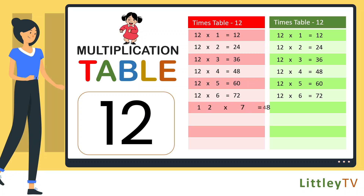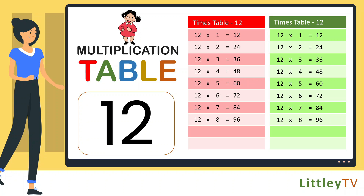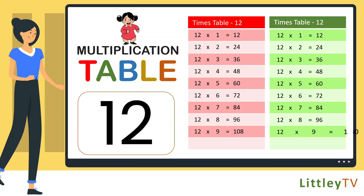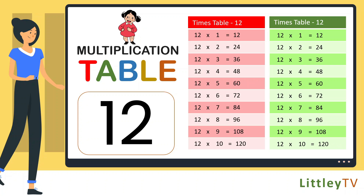12 sevens are 84, 12 eights are 96, 12 nines are 108, 12 tens are 120.